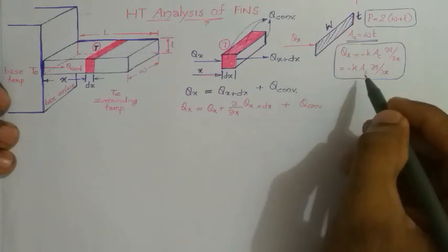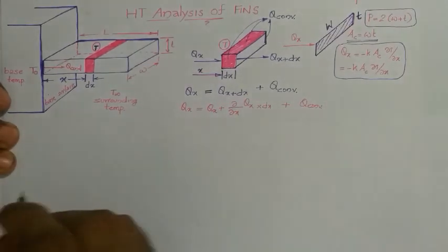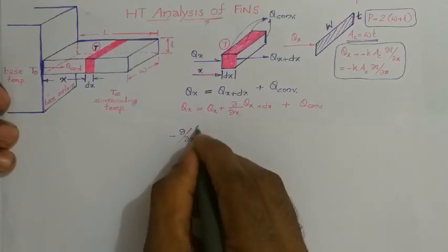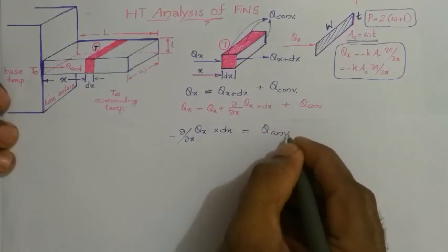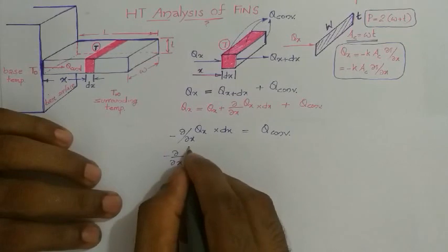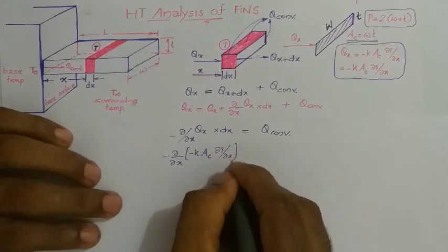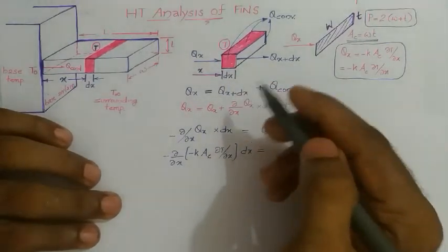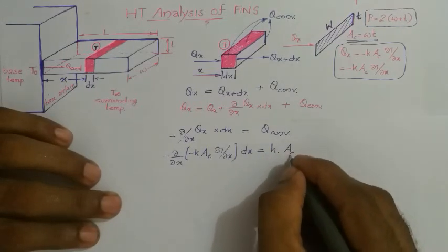For this rectangular cross-section, qx equals minus k times the cross-sectional area (W times T) times the partial derivative of T with respect to x. After simplification, we get: minus the partial derivative of qx with respect to x times dx equals the heat convected from the lateral surface, which by Newton's law of cooling is h times the area for convection from this element times delta T.